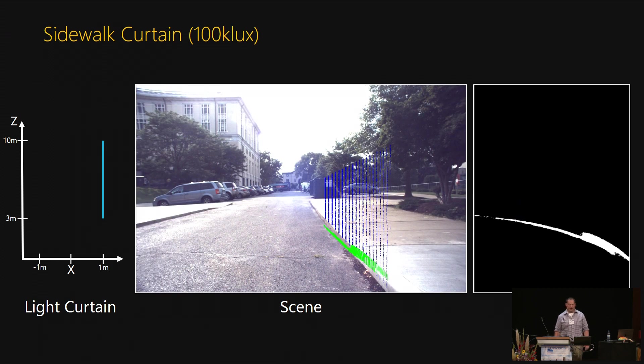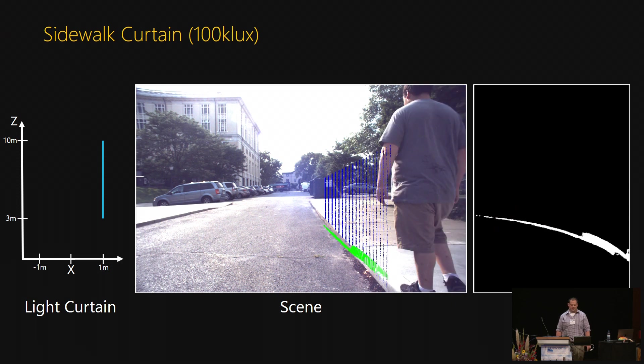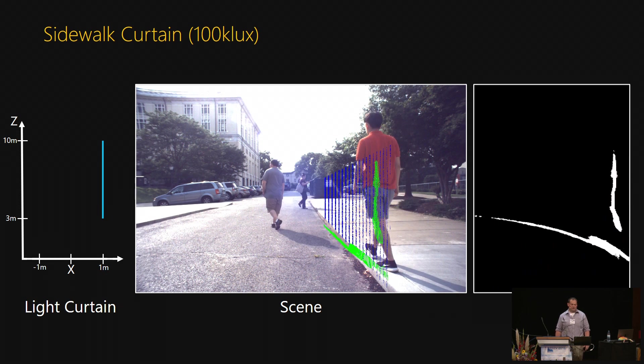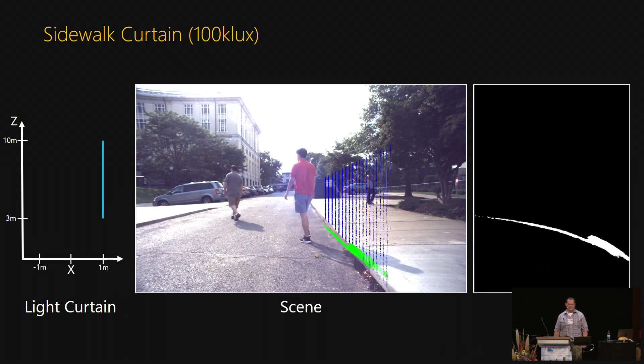Our approach can suppress strong ambient light and work outdoors, too. Here is a curtain that is detecting people crossing the road from a sidewalk on a sunny day. Even though we use a low-power source, the device can still image out to 25 meters in bright sunlight.